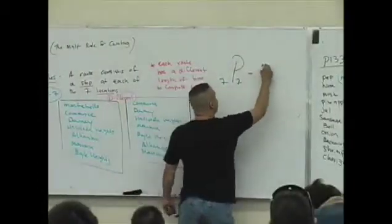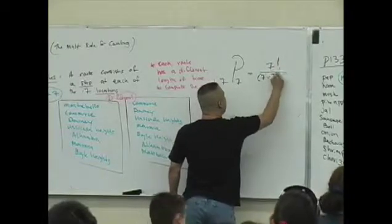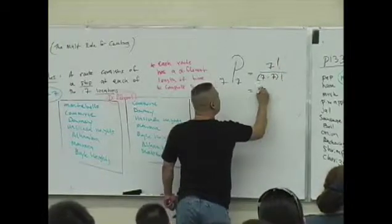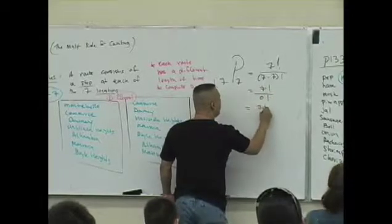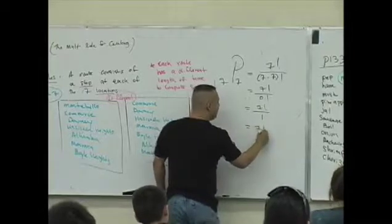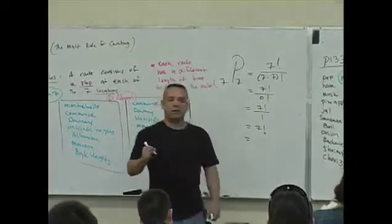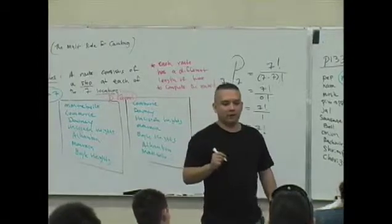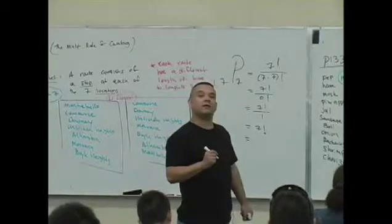What about this problem here? What do you have? 7P what? What's 7P7? Isn't that going to be 7 factorial over 7 minus 7 factorial, or simply 7 factorial over 0 factorial? What is 0 factorial? Isn't this really 7 factorial?